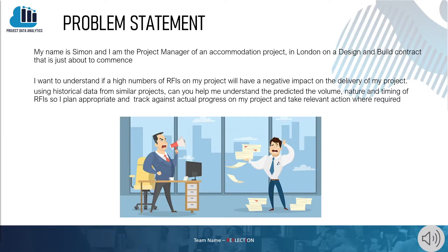I'm a project manager on an accommodation project in London on a design and build contract that is just about to commence. I want to understand if a high number of RFIs in my project will have a negative impact on the delivery of my project. Using historical data from similar projects, can you help me understand the predicted volume, nature and timing of RFIs so I can plan, take appropriate action, and track against actual progress?